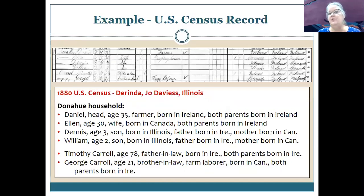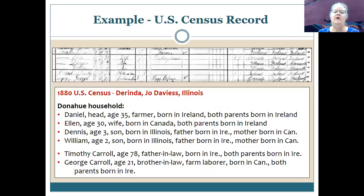Here's an example of a U.S. Census record. The census was taken every ten years beginning in 1790, through to our 2020 census. Here's one I found from 1880 for my Irish family in northwestern Illinois. On census records you'll see handwritten records — there is a typed index, but the handwritten record is most valuable because there may be clues you won't see elsewhere.